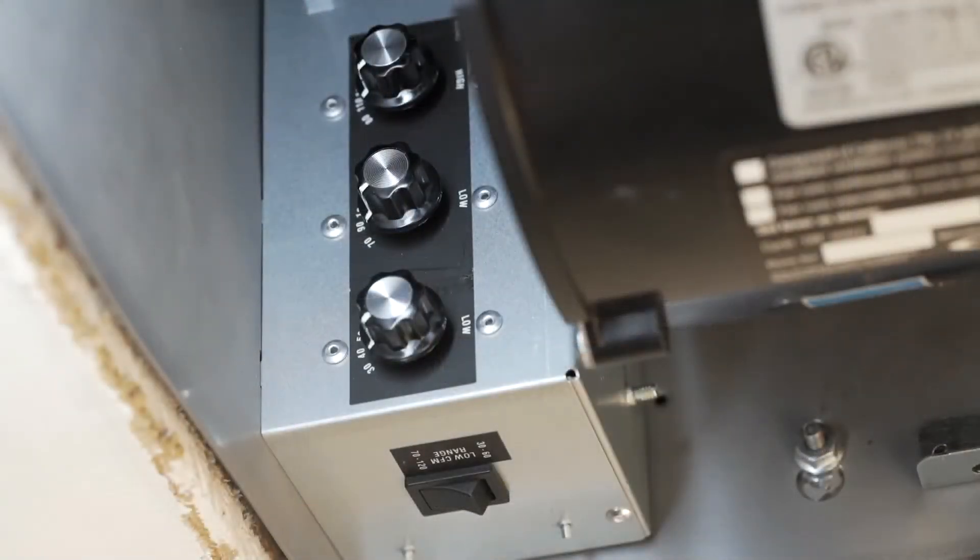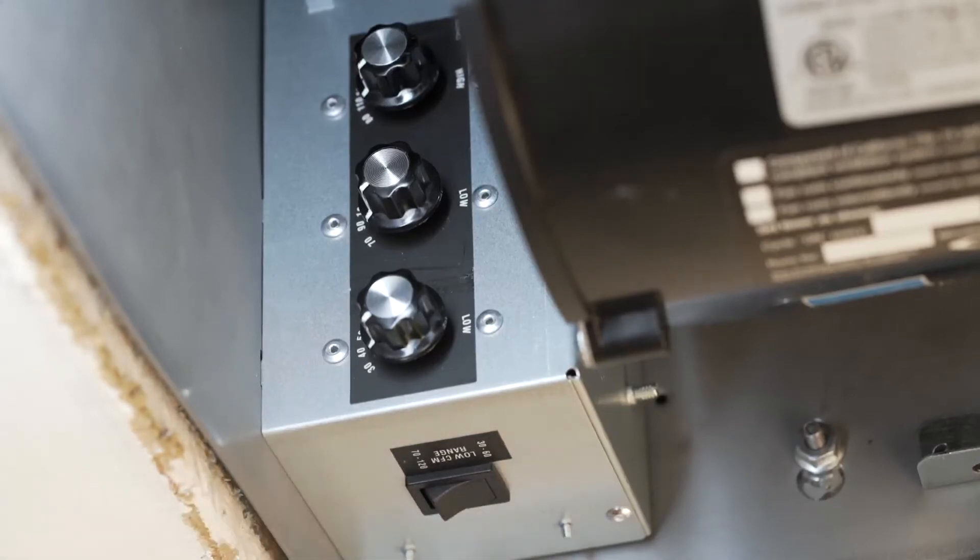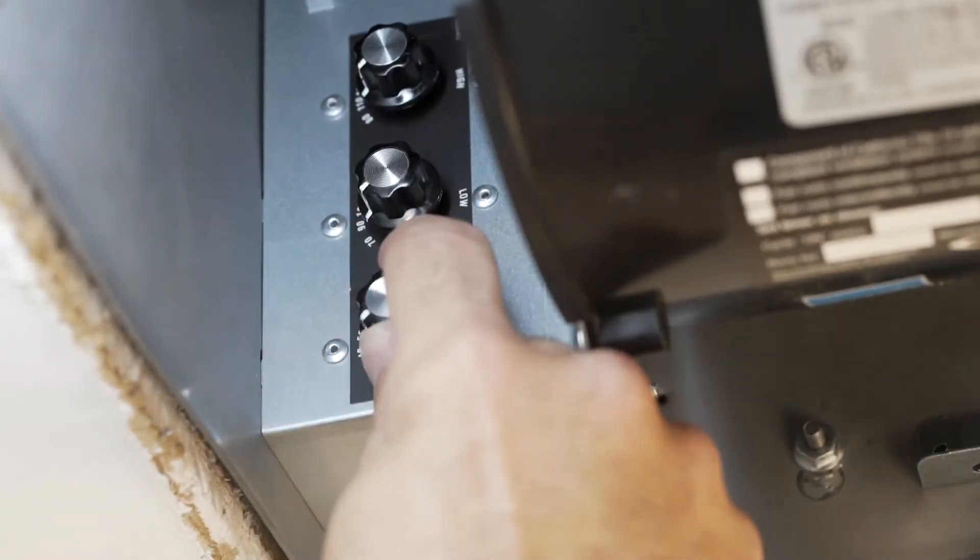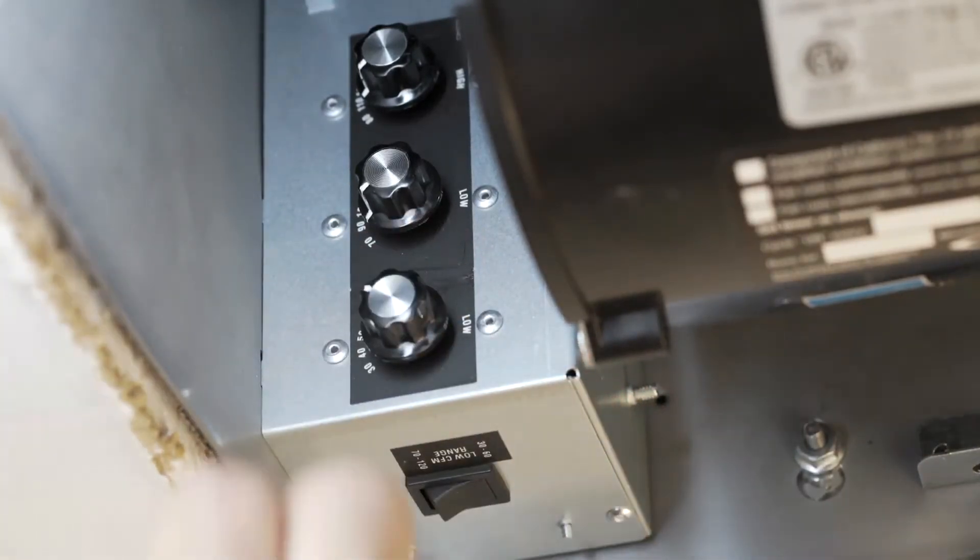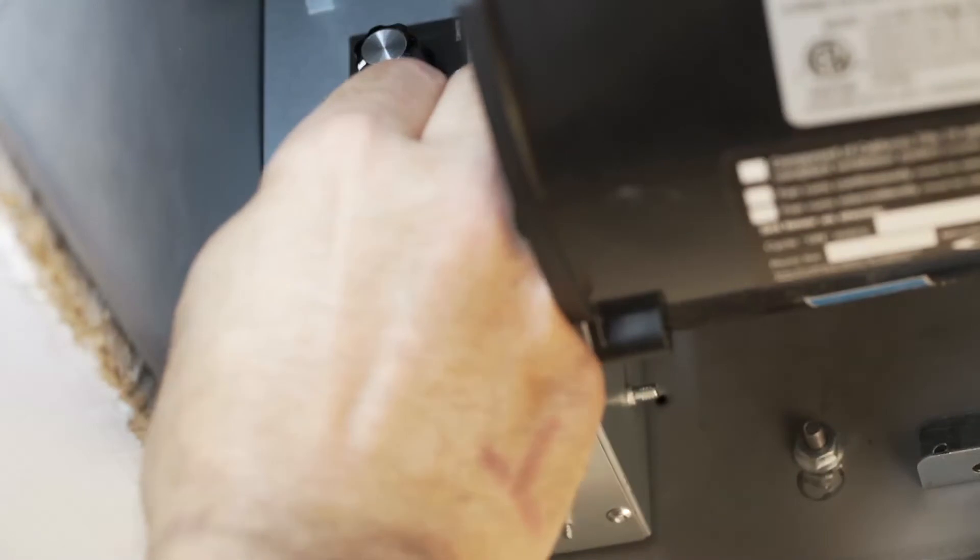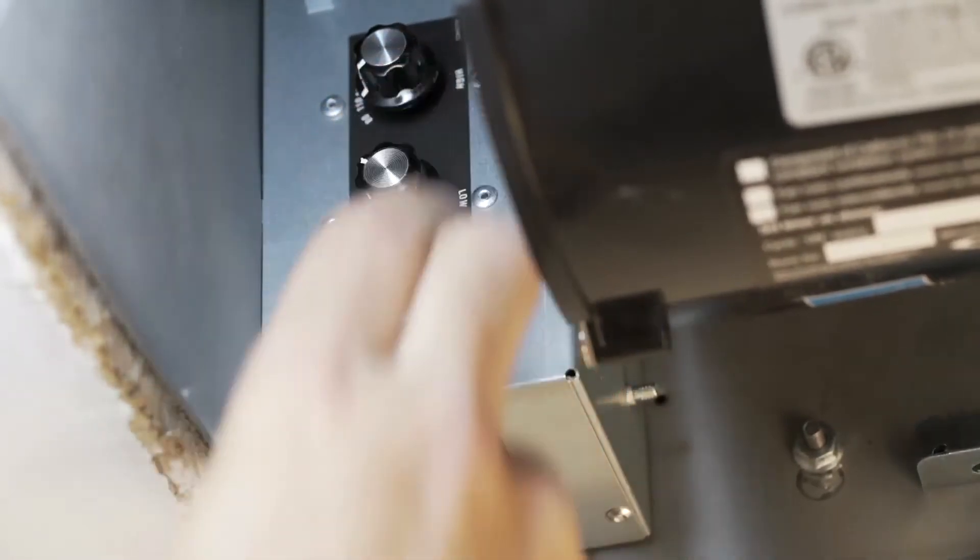To set the speed of the fan, first adjust the rocker switch to decide if you would need more or less than 65 CFM of ventilation. Once you have decided on the minimum required airflow, the fan CFM level can be adjusted by using the adjustment knobs as indicated in your instruction manual.